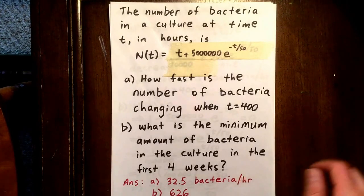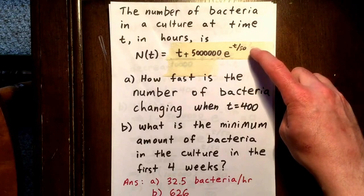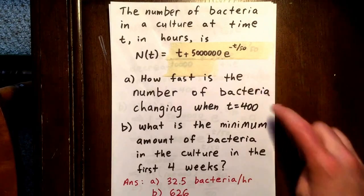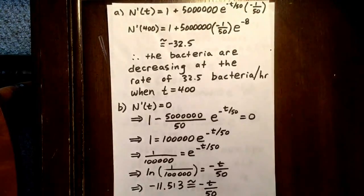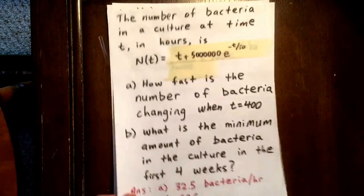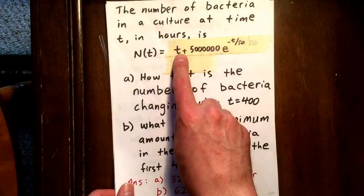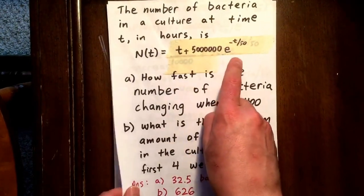So what we're going to do here to determine the rate of change of the bacteria when t equals 400 is we're going to determine the derivative of that expression. The derivative of the first term, t, that derivative is one.